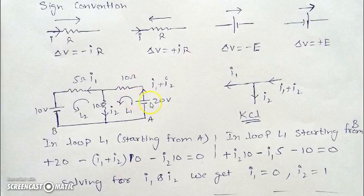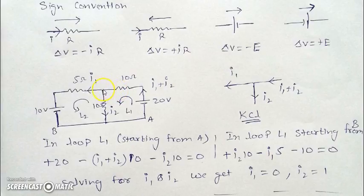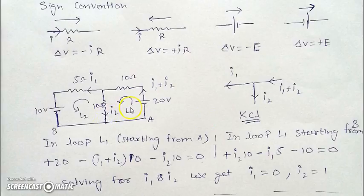In this first example, there are two cells of 10 and 20 volts and a few resistances as shown in the diagram. We need to find the current through all resistances and cells. We assume the current through the 5 ohm resistance is I1 and through the other branch is I2, in the shown directions. According to KCL, the current leaving the junction is I1 plus I2, so the current in the main branch is I1 plus I2.